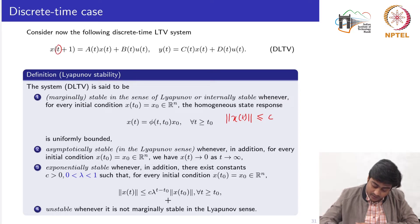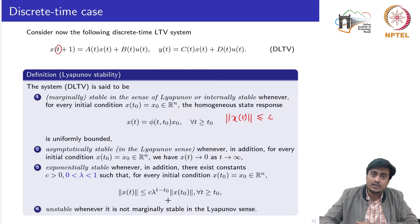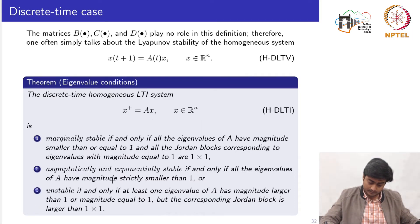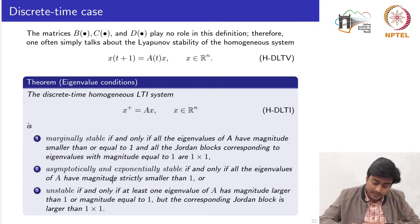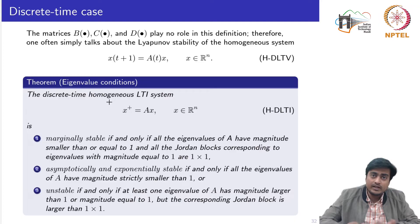The system is said to be unstable whenever it is not marginally stable in the sense of Lyapunov. Almost all the definitions remain similar to their continuous time counterparts, with a minor difference only in the third statement. Since the B, C, D, E matrices play no role in these definitions, we will mostly speak about the stability of the homogeneous system without considering the input. For LTI systems we study two tests: the eigenvalue test and the Lyapunov test.